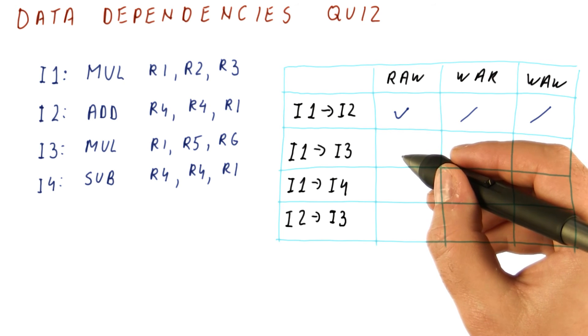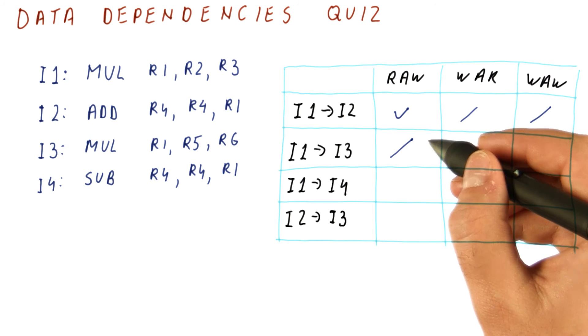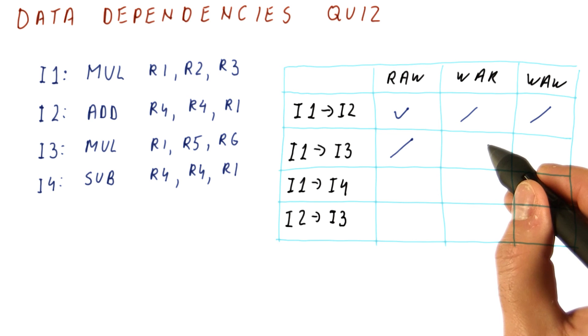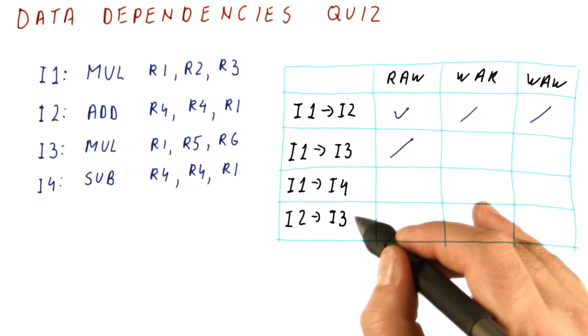I'm also going to tell you that there is no read after write dependence here, but you need to figure out the remaining eight dependencies. Put a check mark in each of these boxes if there is such a dependence between these instructions.